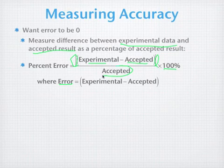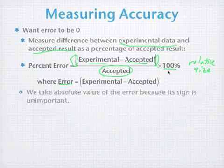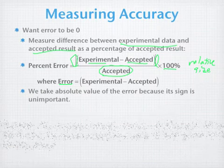We're going to divide that by the accepted value, and we're going to multiply that by 100%. The reason we divide by the accepted value is that we want to know this as a relative size. An error of 1 out of 100 is going to be a lot worse than an error of 1 out of 1000. As I said, we take the absolute value because its sign is unimportant to us, we only care about the size.